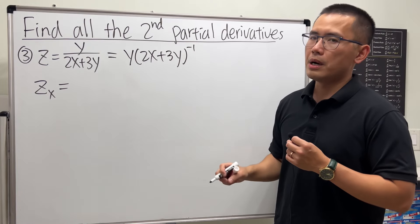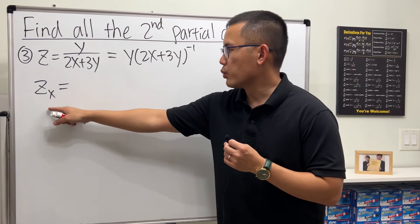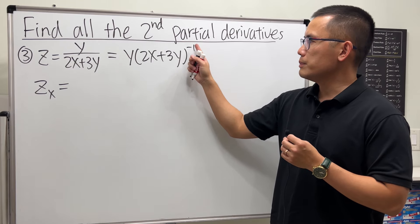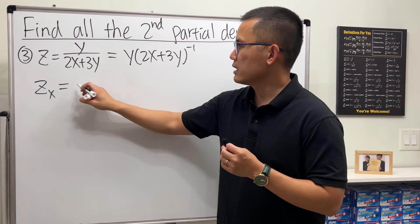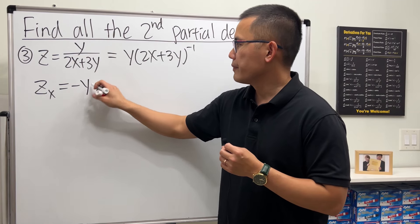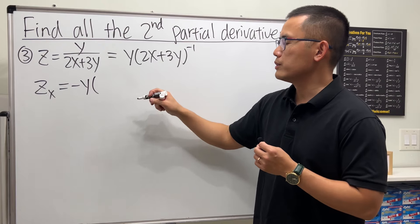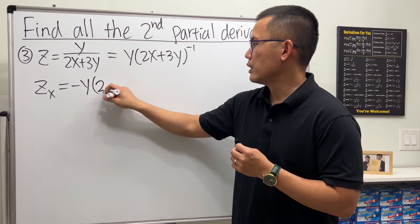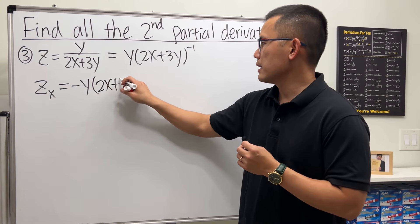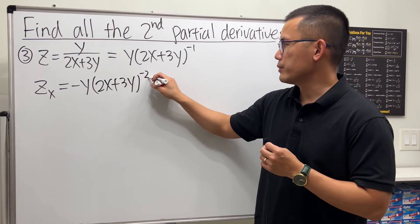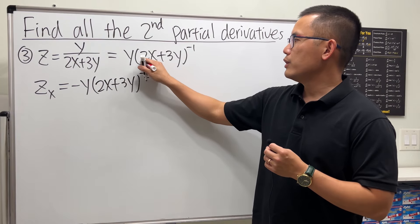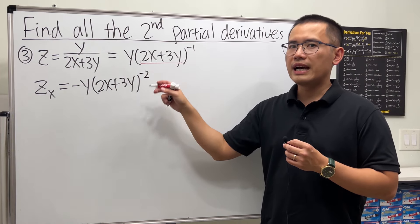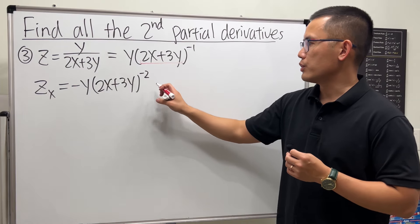In the x world, y is just a constant, so we can use the power rule. We get negative y times (2x + 3y) to the negative two, then use the chain rule and multiply by the derivative inside with respect to x, which gives us a factor of 2.